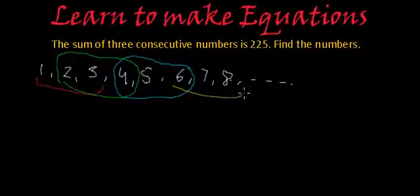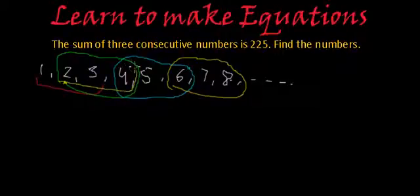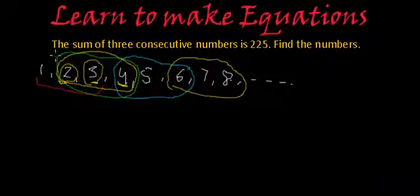So what can you say about consecutive numbers? In consecutive numbers, suppose the group starts from two, three, four - this three is actually one more than two, and this four is one more than three. So any number is one more than its previous number and one less than its next number. So here we have learned about consecutive numbers. Now let's concentrate on the problem statement, make equations, and solve it.